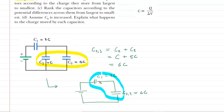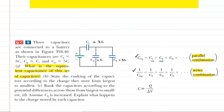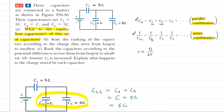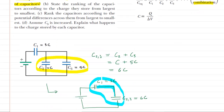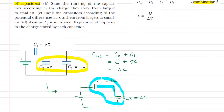Now we want to combine these capacitors. These are in series — there is no junction here because as we travel from C1 to the other capacitor, it's one continuous pathway. The series combination equation is a little more involved. It's not as simple as just adding them; you have to add the reciprocals, and then reciprocate that result.